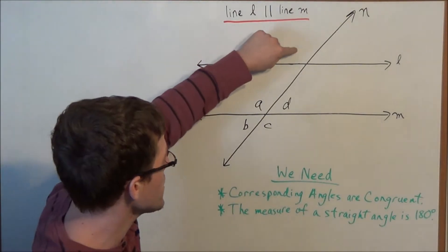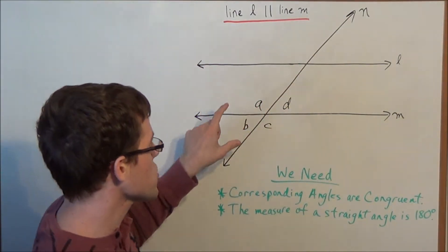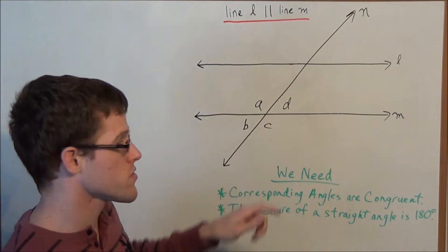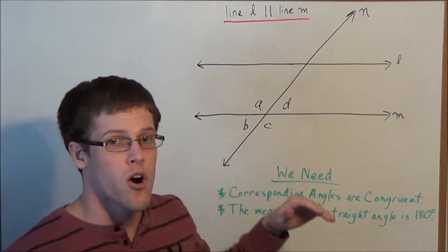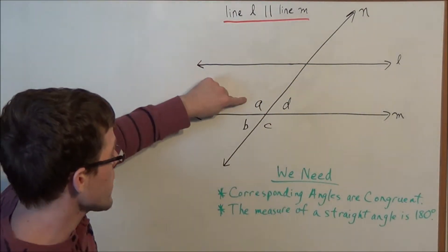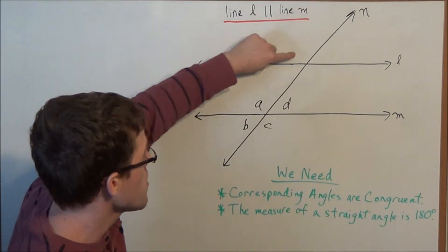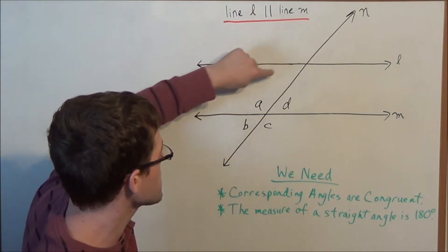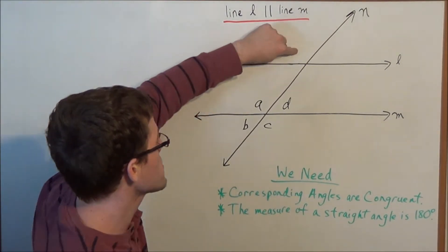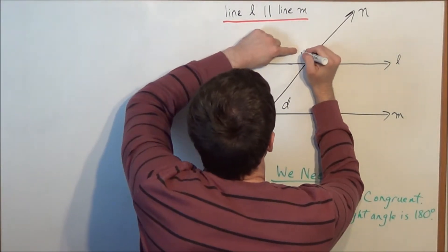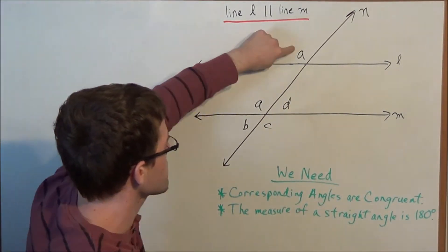This postulate allows me to name these four angles based on the value of these four angles. And remember this only works when line L and line M are parallel. So angle A would correspond to this angle here because both of these angles are located in the top left corner. So this angle here has to equal A because they're in corresponding places.